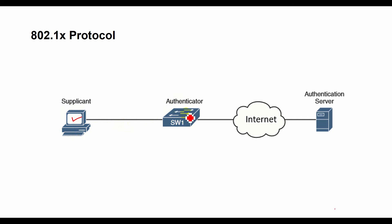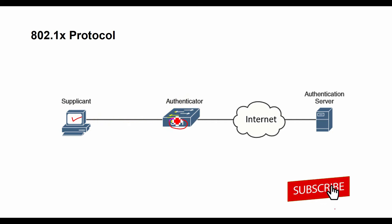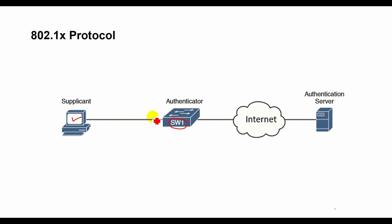The Authenticator is any network device such as a wireless access point or an Ethernet switch. The switch controls physical access to the network based on the authentication status of the client. The switch acts as a proxy between the client and the authentication server. It requests identifying information from the client, verifies that information with the authentication server, and relays a response to the client.